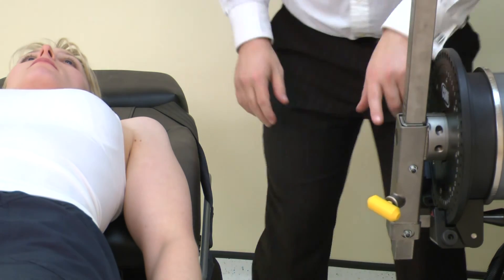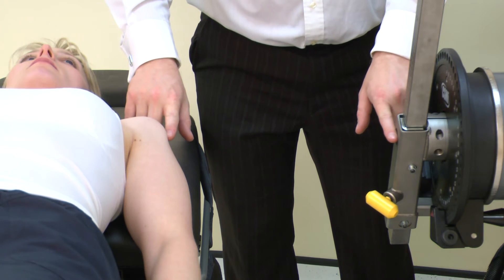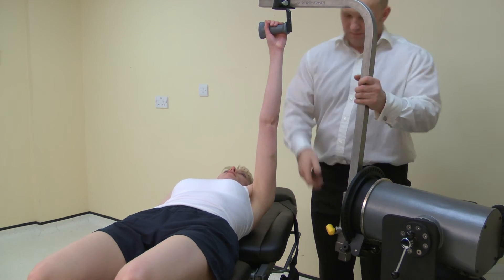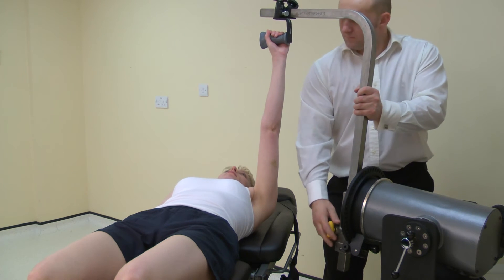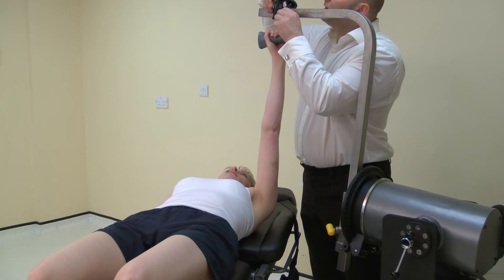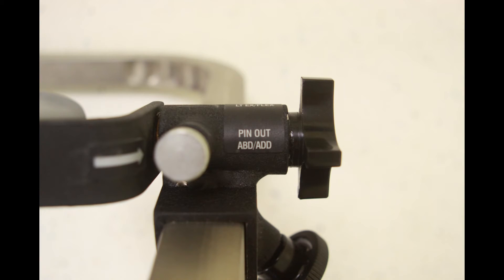Once alignment is achieved, ask the subject to hold the handle. The length of the elbow/shoulder adapter may need adjustment. Set the hand grip to the freely rotating position by pulling and twisting the pin. This allows the hand grip to give pronation and internal rotation.